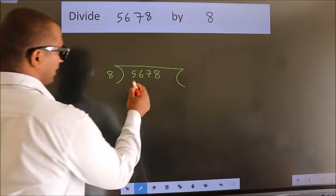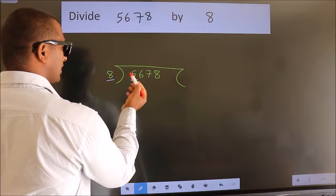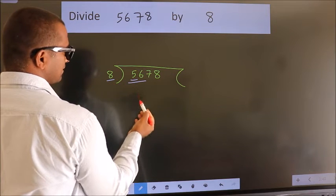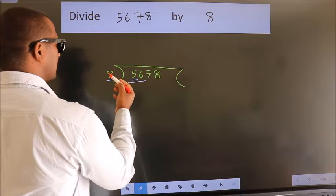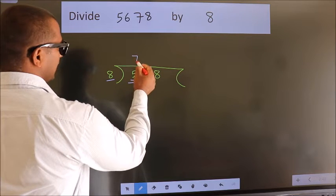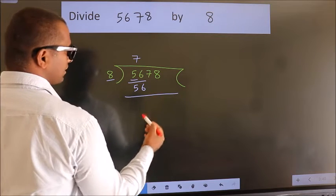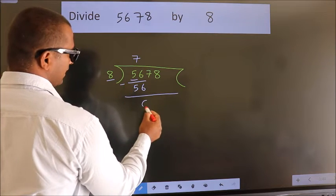Here we have 5. Here 8. 5 is smaller than 8, so we should take two numbers: 56. When do we get 56 in the 8 table? 8 times 7 is 56. Now we should subtract. We get 0.